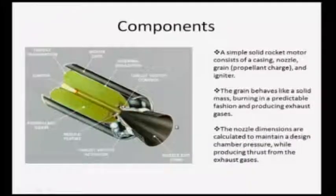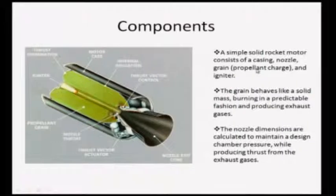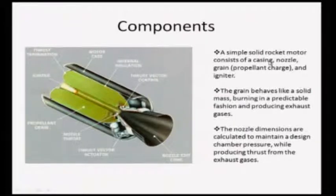This is the nozzle - a converging-diverging nozzle. This is the nozzle exit cone through which the burnt products expand to the ambient. So the main components of a solid propellant rocket are: a casing, a nozzle, the propellant charge or grain, and the igniter. These are the four main components.